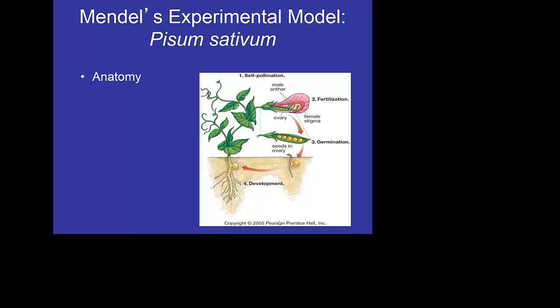He gets a lot of flack for working with peas. There's nothing wrong with a pea. Let's look at the anatomy of a pea plant. It's pretty simple. It's a dicot. How do I know that? It's got branched venation on the leaves. It's got a taproot.